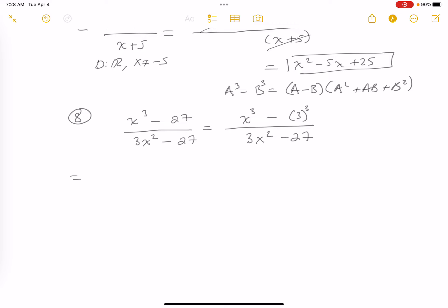Let's start factoring it. The top is going to be x minus 3, times x squared plus 3x plus 9. On the bottom, I notice there's a 3, x squared minus 9. Let's keep going.